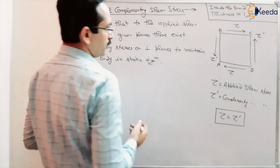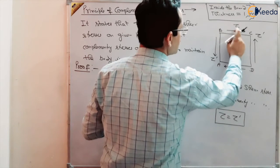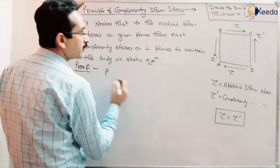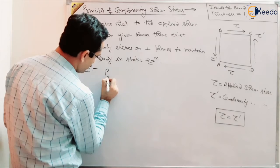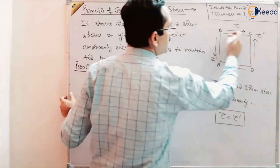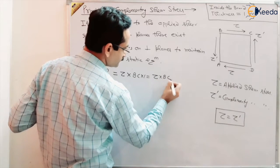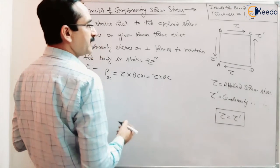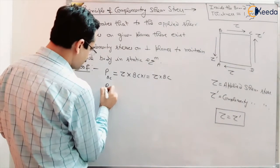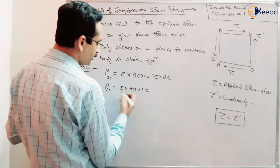This is the applied shear stress tau. What is the force due to this shear stress tau? Force on BC will be equal to shear stress tau multiplied by area. Area is BC multiplied by one unit dimension, so P on BC equals tau times BC. The same shear stress is there on AD, so the same load will be developed: P on AD equals tau times AD.